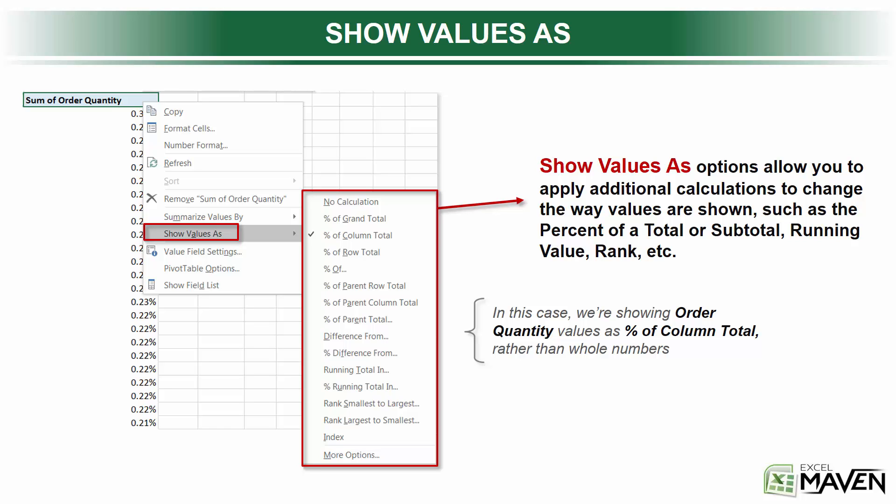In this screenshot we're looking at a metric called Order Quantity. But instead of looking at the actual quantity or number of orders for each row, we're viewing that metric as the percent of the column total rather than just the whole numbers. That's just one example — you've got tons of other choices like calculate the difference from, running totals, ranks, index values, etc.